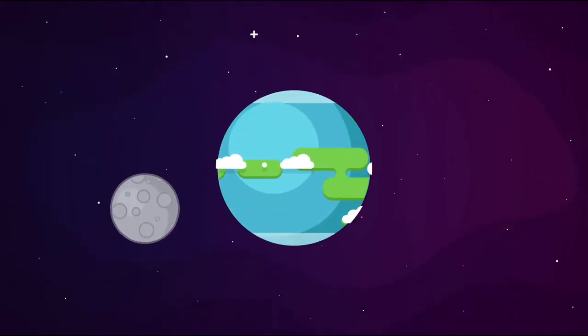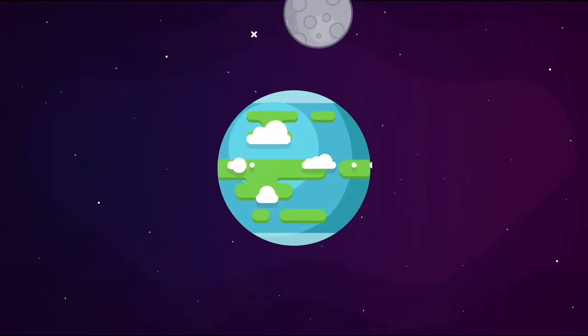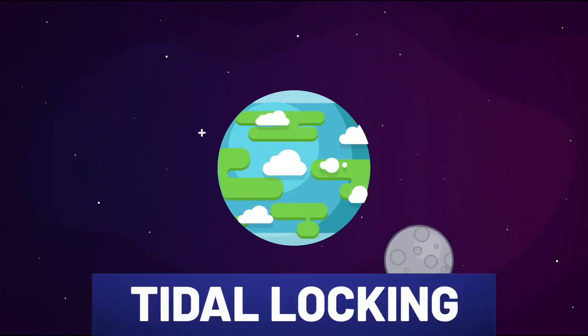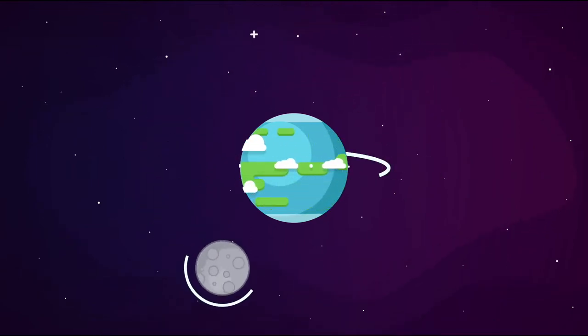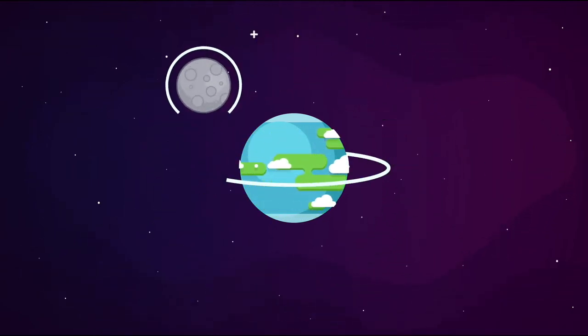The Moon always shows us its same side as it revolves around the Earth in a phenomenon known as tidal locking. Really, all this means is that the Moon rotates exactly once for every time it orbits our planet.